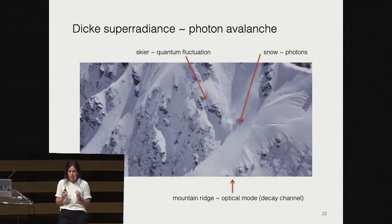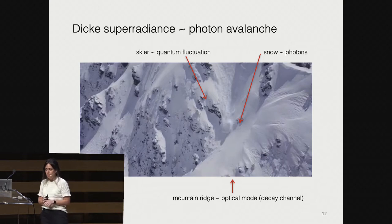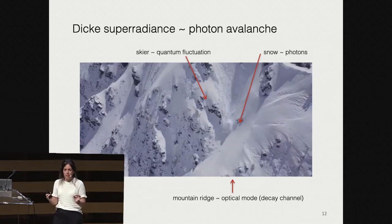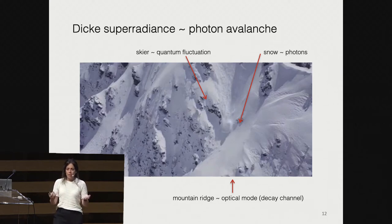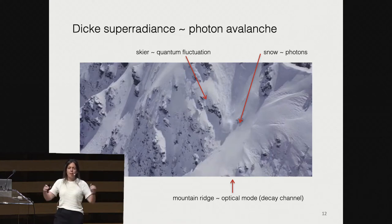This is very important because we have a single decay channel to collect our photons — like having only one mountain reach for an avalanche. If we have many, many decay channels, it's like the ground becomes flat and there is no avalanche. And I will talk about how having many decay channels is going to be problematic for the onset of Dicke superradiance.